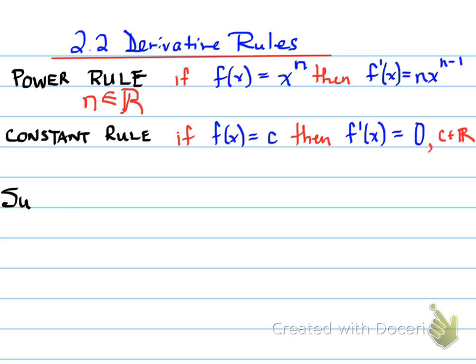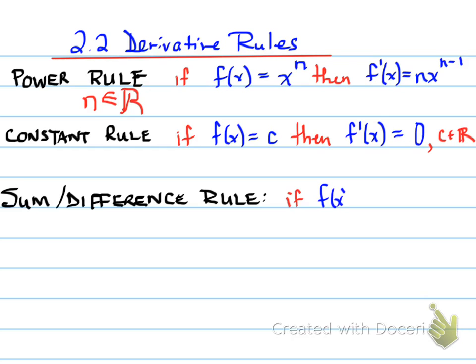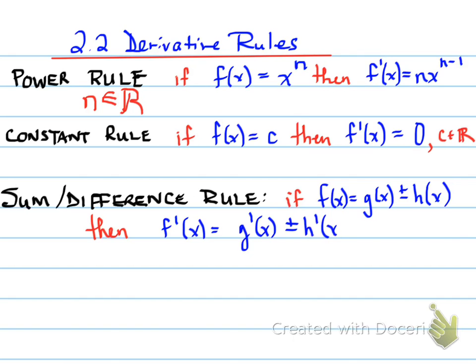Our last rule is the sum and difference rule. If you have the sum of two differentiable functions g and h, then the derivative of their sum or difference is equal to the sum or difference of their individual derivatives. These three rules are essentially what you need to answer the questions in this section. We'll look at the product rule and quotient rule a little later.